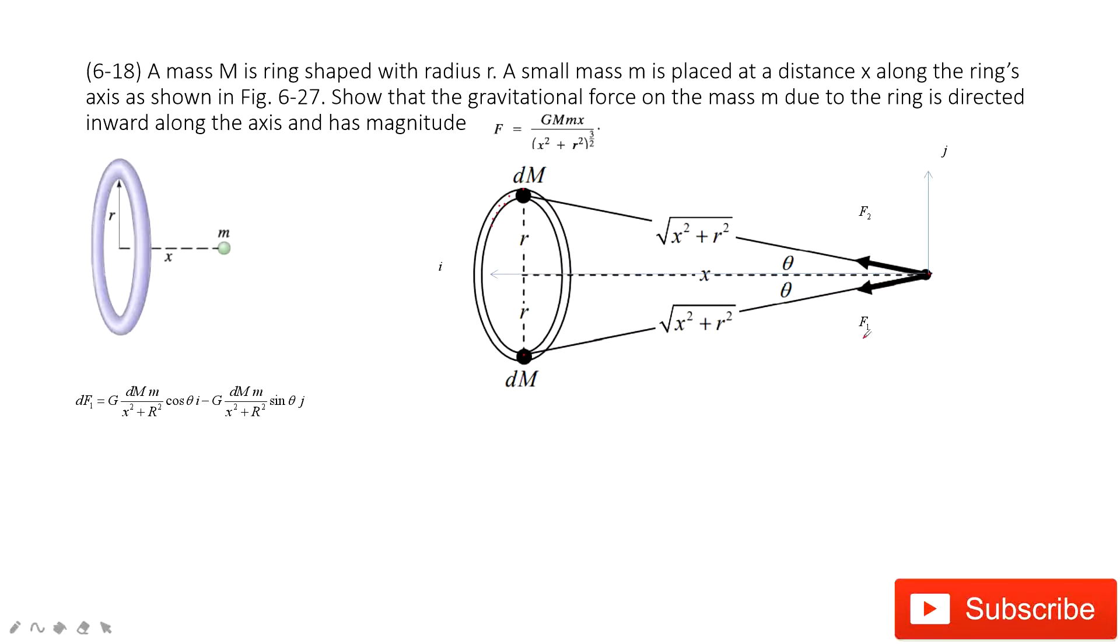So first thing we look at is f1. The gravitational force is G times this mass dm times this mass small m, and the distance is squared. And then we need to project this force on the x component. This angle theta, so cosine theta, times i.